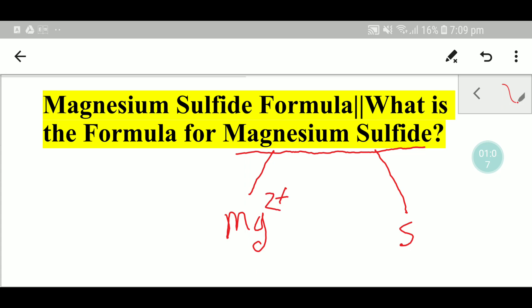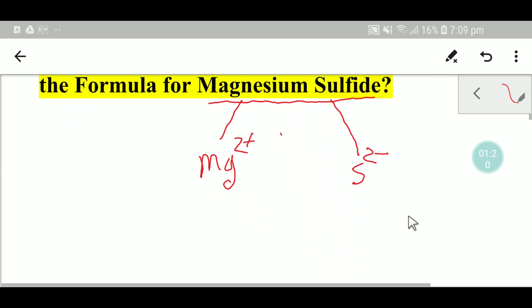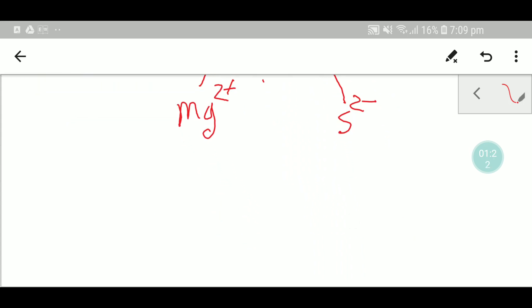Sulfate will take the two electrons released by magnesium, becoming 2-. Now we have to place these two ions: magnesium cation and sulfate anion.